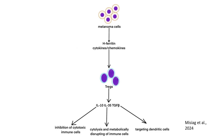These signaling molecules establish a connection between tumor cells and the immunosuppressive Treg population. Tregs, or regulatory T cells, play a critical role in suppressing adaptive immune responses. They achieve this through the production of immunosuppressive cytokines including interleukin-10, interleukin-35 and TGF-β. Tregs inhibit cytotoxic T cells and natural killer cells, which are essential for directly attacking melanoma cells.